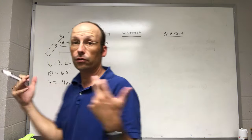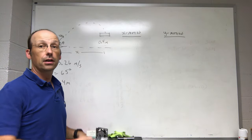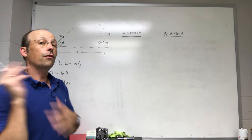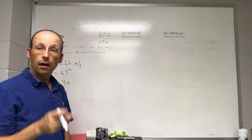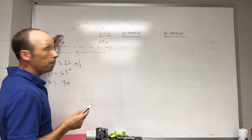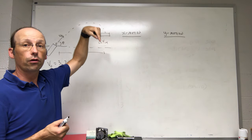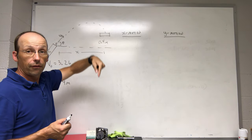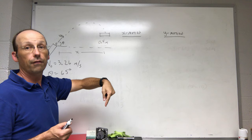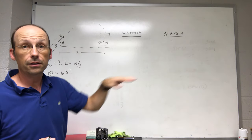Now what connects those two things together is time. Whatever time it takes to move in the x direction is the same time it takes to move in the y direction. The other important thing is that while the ball is in the air, the only force on it is the gravitational force pulling down. This means that there is an acceleration in the vertical direction of negative 9.8 meters per second squared and constant velocity, no acceleration in the horizontal direction.